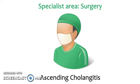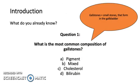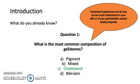Hello and welcome to the surgery topic: ascending cholangitis. Let's start off with a few questions. What is the most common composition of gallstones? Gallstones are small stones that form in the gallbladder. The answer is cholesterol. Cholesterol gallstones can be due to too much cholesterol in your diet, or if your gallbladder cannot empty properly.